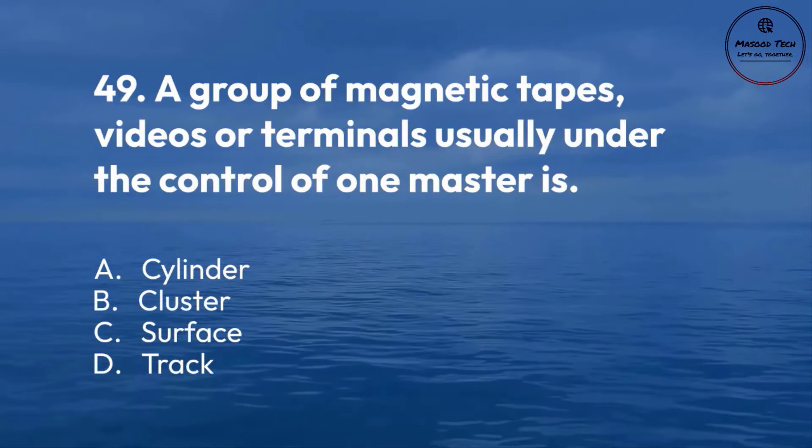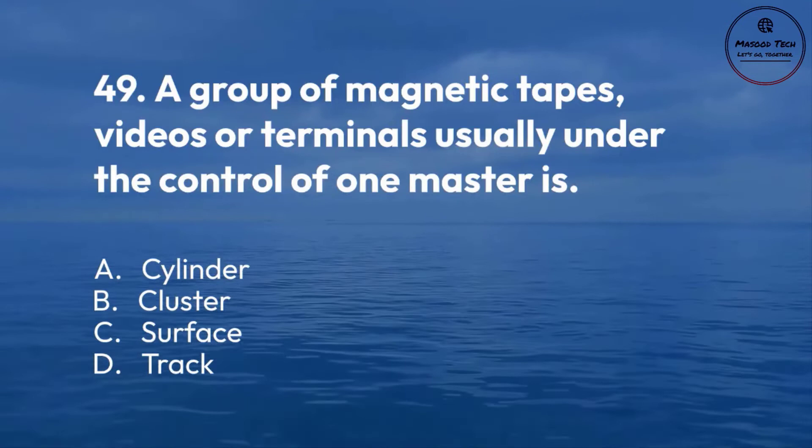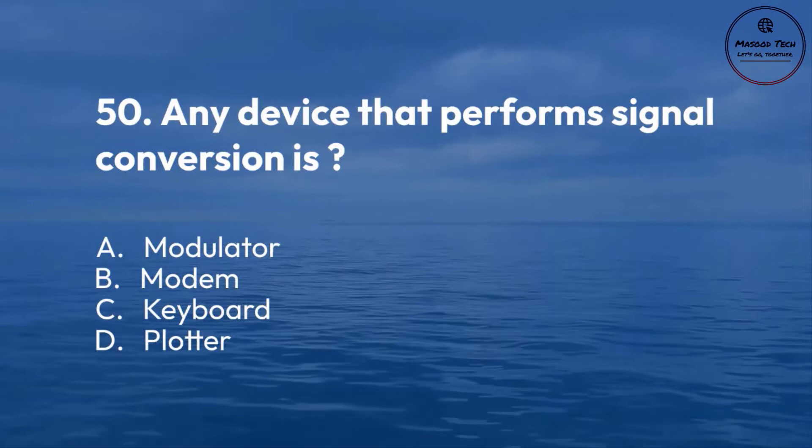Number 50. Any device that performs signal conversion is: A. Modulator. B. Modem. C. Keyboard. D. Plotter. Correct answer is C.